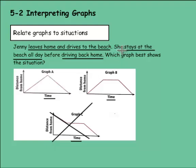So let's look at the next clue. She stays at the beach all day. And I think this is going to solve it for me. If you look at graph A, it looks like as soon as she got to the beach here, she would go right back home. But it says she stays at the beach all day, which would be a nice flat line, staying far away from home. And then drives back home. So it looks like graph B is going to be our correct graph here.